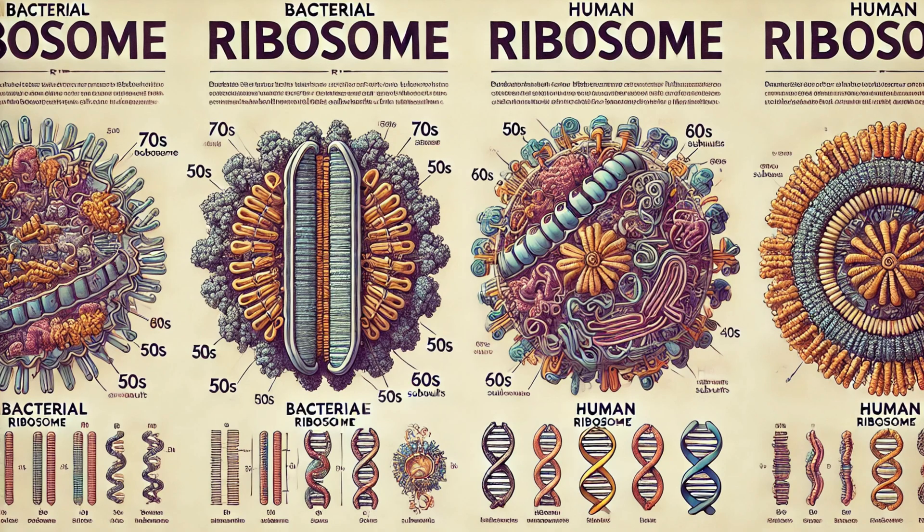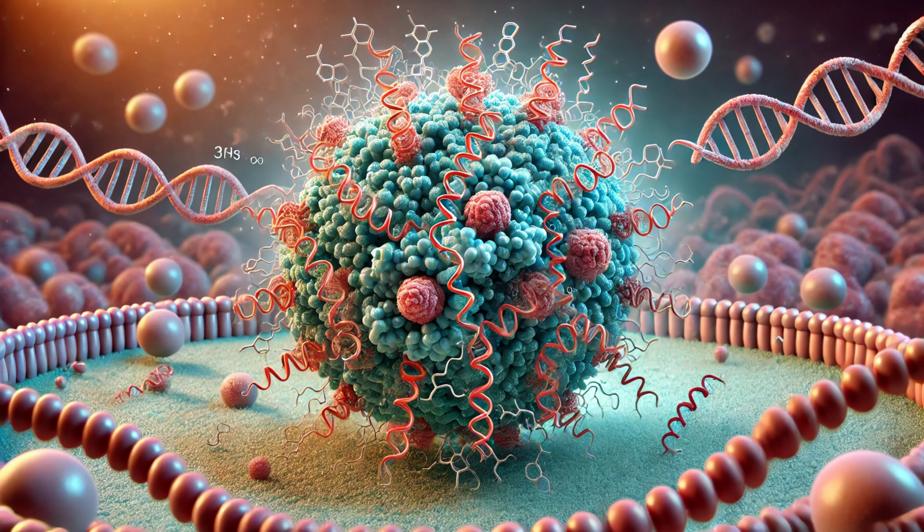Selective binding is another clever tactic. Antibiotics like tetracyclines and macrolides bind to bacterial ribosomes, the protein factories of the cell. Bacterial ribosomes are structurally different from human ribosomes, allowing these drugs to inhibit bacterial protein synthesis without affecting human cells. Tetracyclines work by binding to the 30S subunit of the bacterial ribosome, blocking the attachment of aminoacyl-tRNA to the ribosomal acceptor site. This prevents the addition of new amino acids to the growing peptide chain, halting protein synthesis and leading to bacterial death, while human cells with different ribosomal structures are not affected.